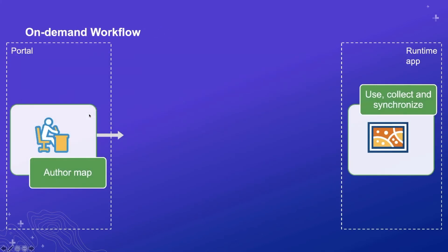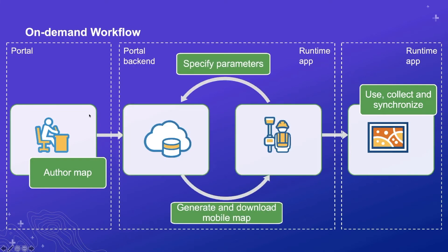In the on-demand workflow, the author simply publishes the map. When a device needs to go offline, it specifies an area of interest along with potentially numerous other parameters and requests that map be generated to take offline. The portal backend then does the work of packaging up the operational data, base maps, and so forth. The device can then go offline, make edits, and synchronize those edits back when connectivity is available. However, each time a device needs to take that map offline, there's work to be done on the portal backend. While this is more flexible, it doesn't scale nearly as well as the preplanned solution.